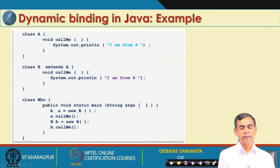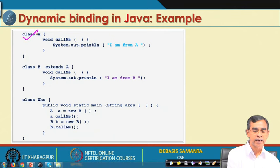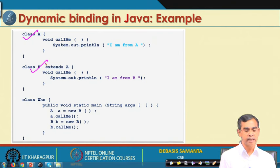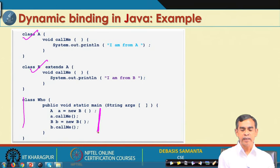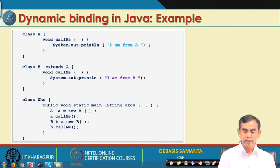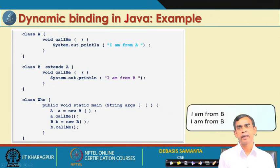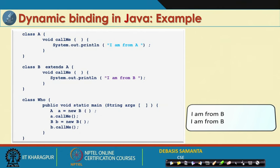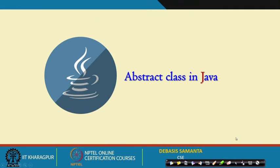Another example is provided for runtime polymorphism — there is a superclass, a derived subclass, and a main method. You can look at this example and try to determine the output, then verify by running the program. This tests your understanding of how different methods are called when inheritance is involved.